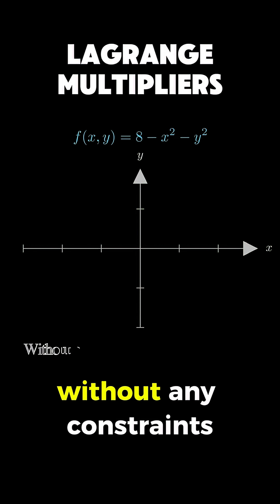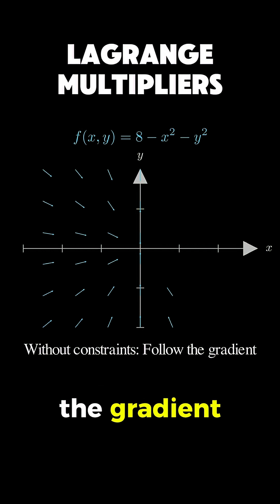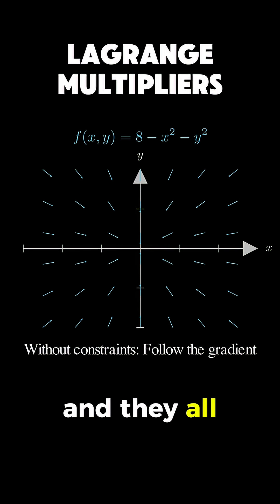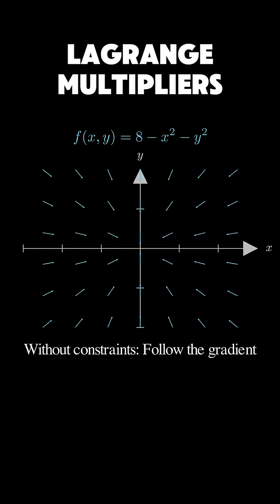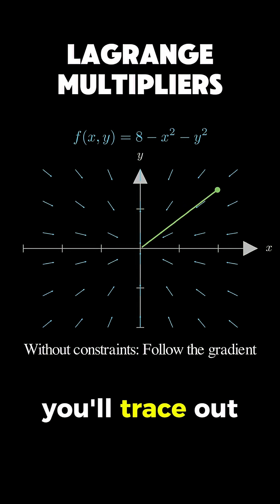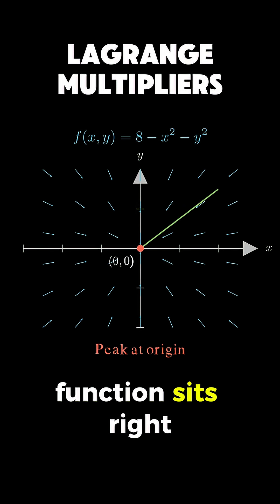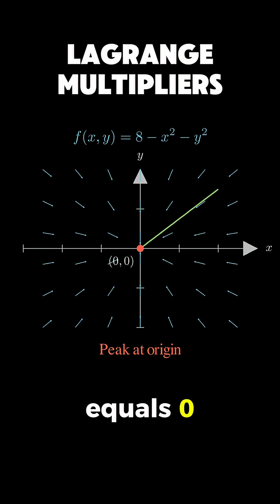When you're trying to maximize a function without any constraints, the strategy is pretty straightforward — you just follow the gradient. These blue arrows show the gradient field, and they all point toward the direction of steepest increase. If you start anywhere and keep following these arrows, you'll trace out a path that leads you straight to the peak, which for our function sits right at the origin where x equals 0 and y equals 0.